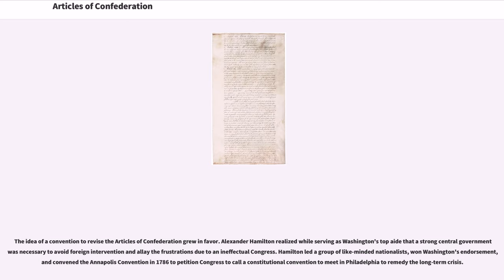Alexander Hamilton realized while serving as Washington's top aide that a strong central government was necessary to avoid foreign intervention and allay the frustrations due to an ineffectual Congress. Hamilton led a group of like-minded nationalists, won Washington's endorsement, and convened the Annapolis Convention in 1786 to petition Congress to call a constitutional convention to meet in Philadelphia to remedy the long-term crisis.